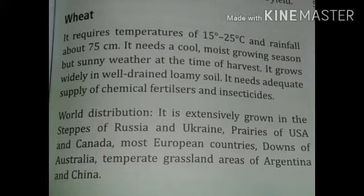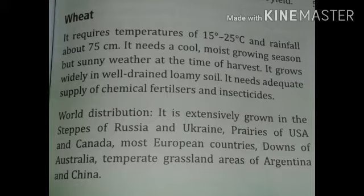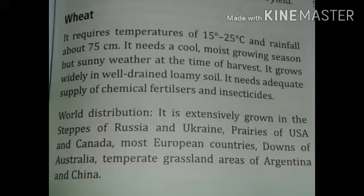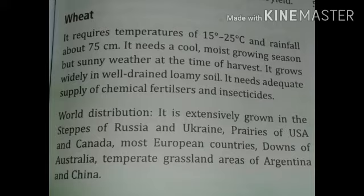With Rabi crops — wheat. It requires a temperature of 15 to 25 degrees Celsius and rainfall of about 75 cm. It needs a cool, moist growing season but sunny weather at the time of harvest. It grows widely in well-drained loamy soil and needs an adequate supply of chemical fertilizers and insecticides. World distribution of wheat includes Russia, Ukraine, the Steppes, the Downs of Australia, temperate grasslands of Argentina, and China.